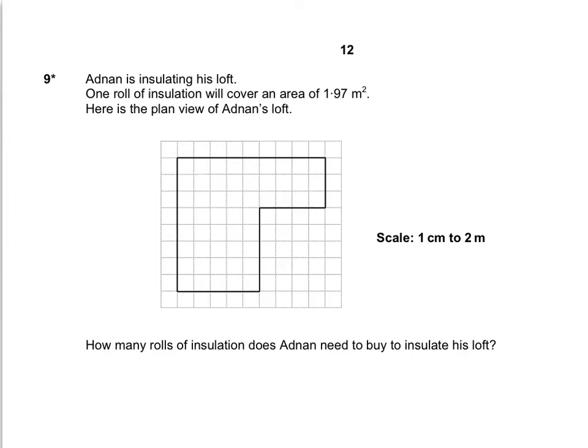Question 9. Adnan is insulating his loft. One roll of insulation will cover an area of 1.97 metres squared. Here is the planned view of Adnan's loft. How many rolls of insulation does Adnan need to buy to insulate his loft?